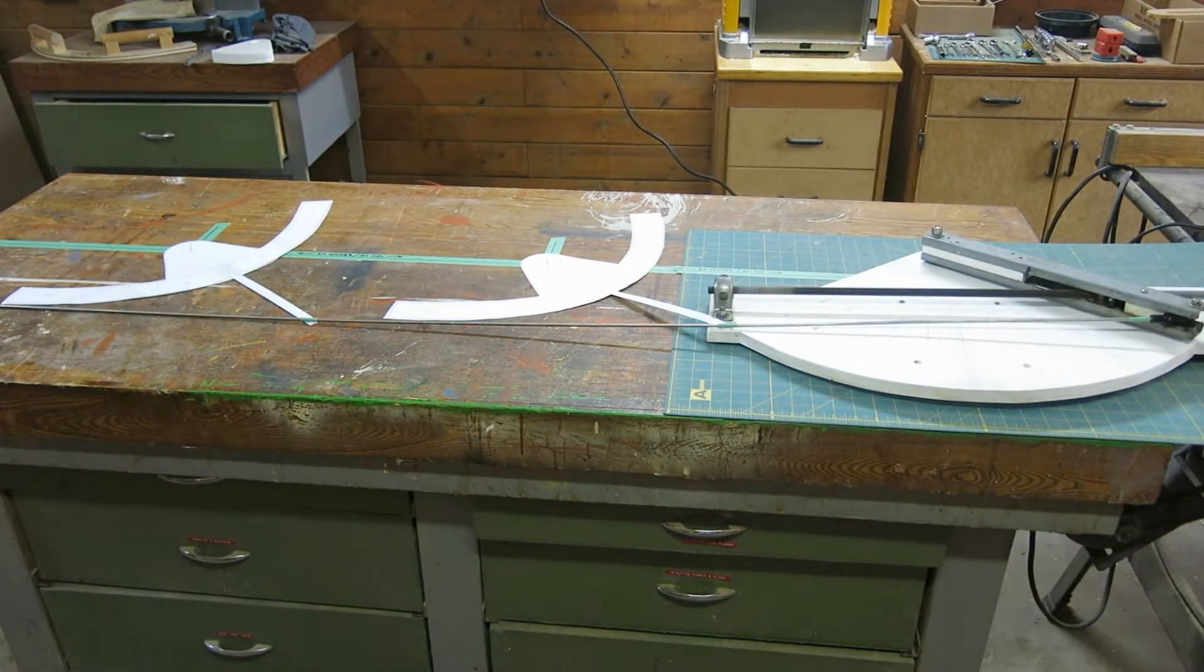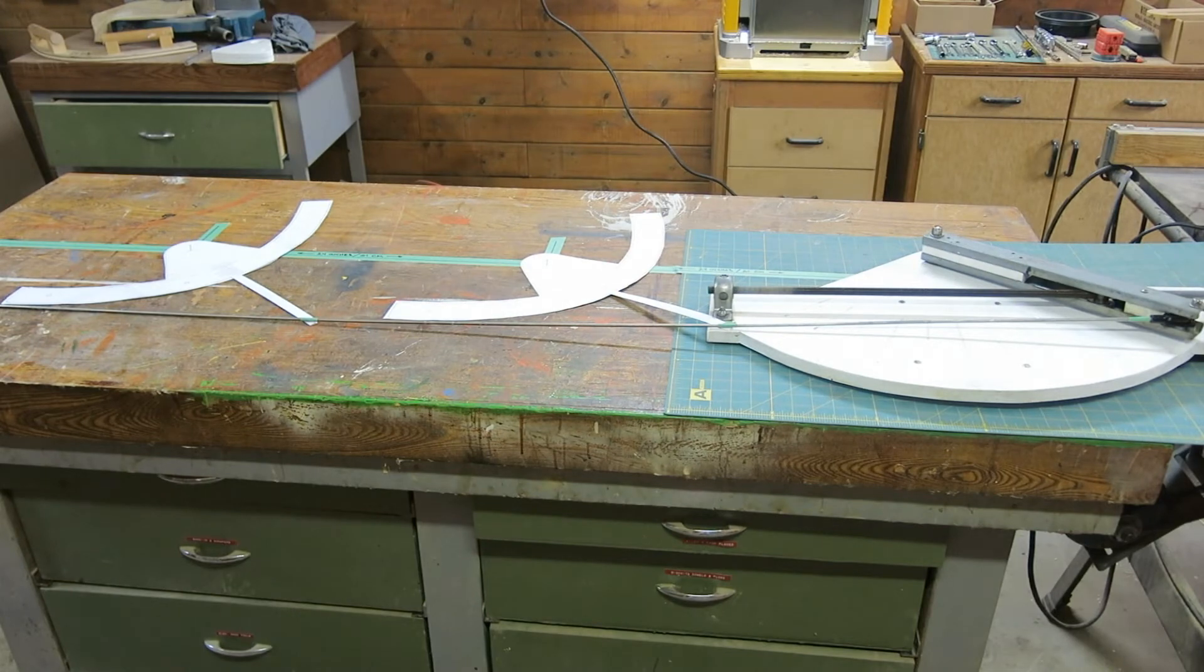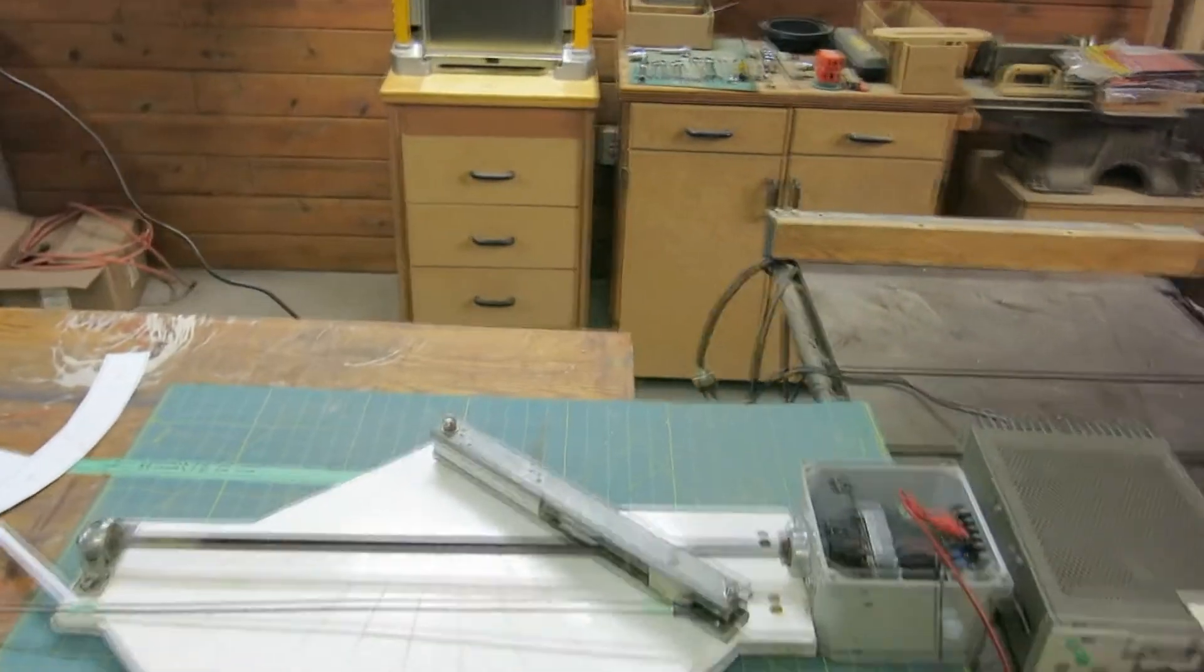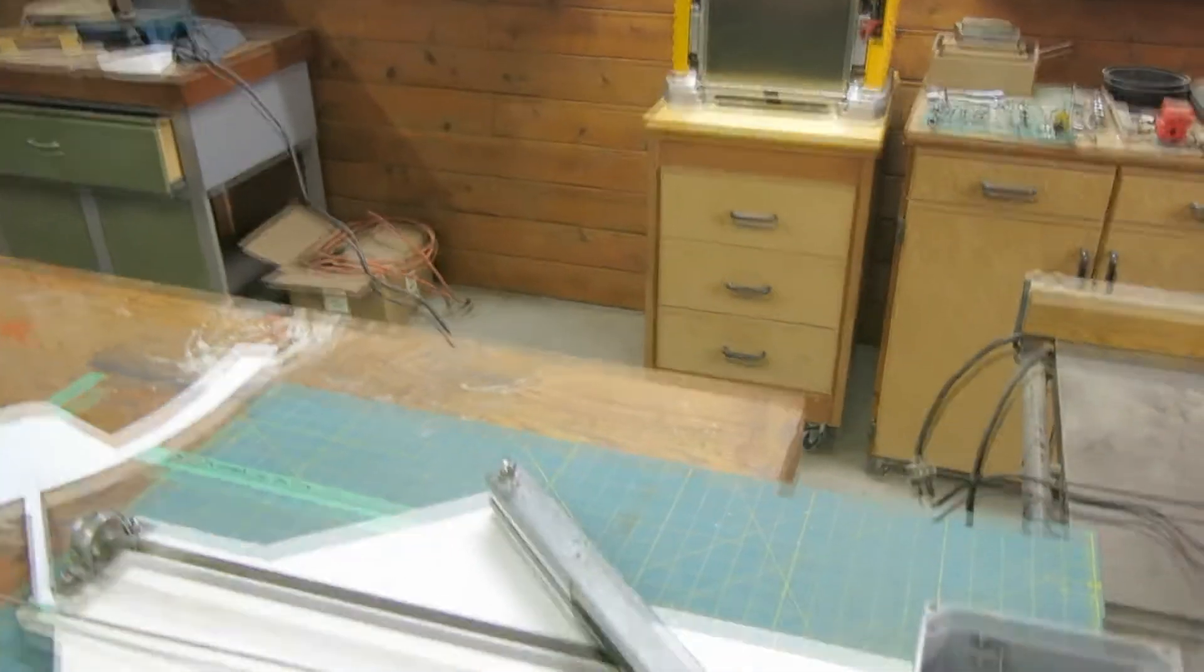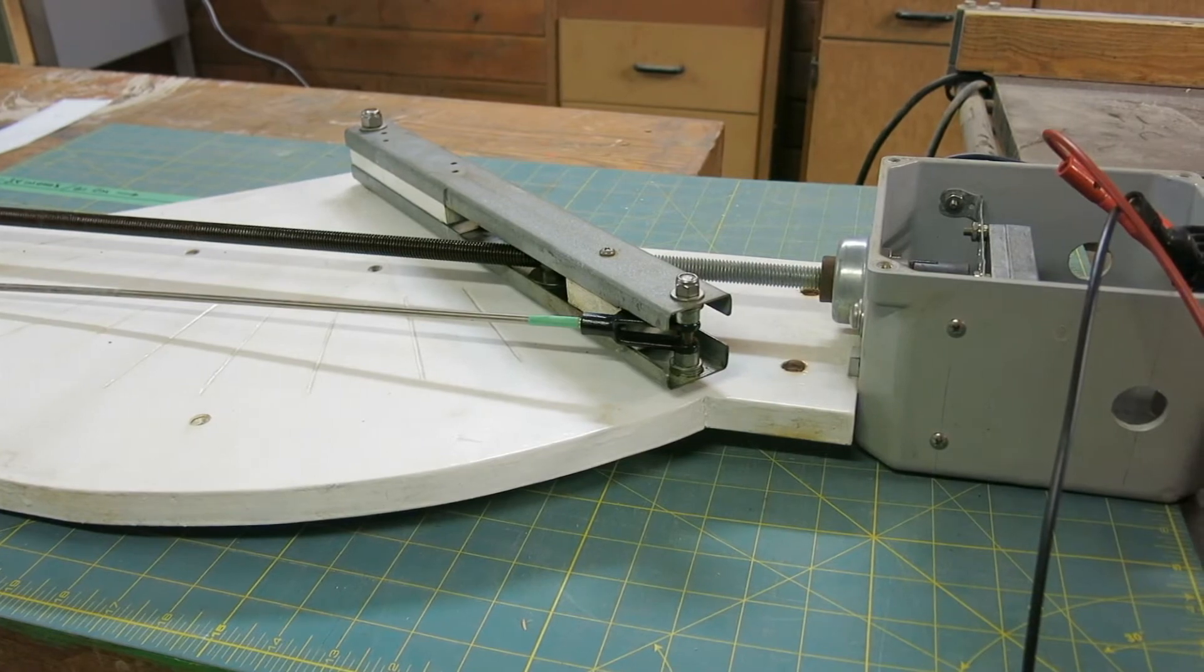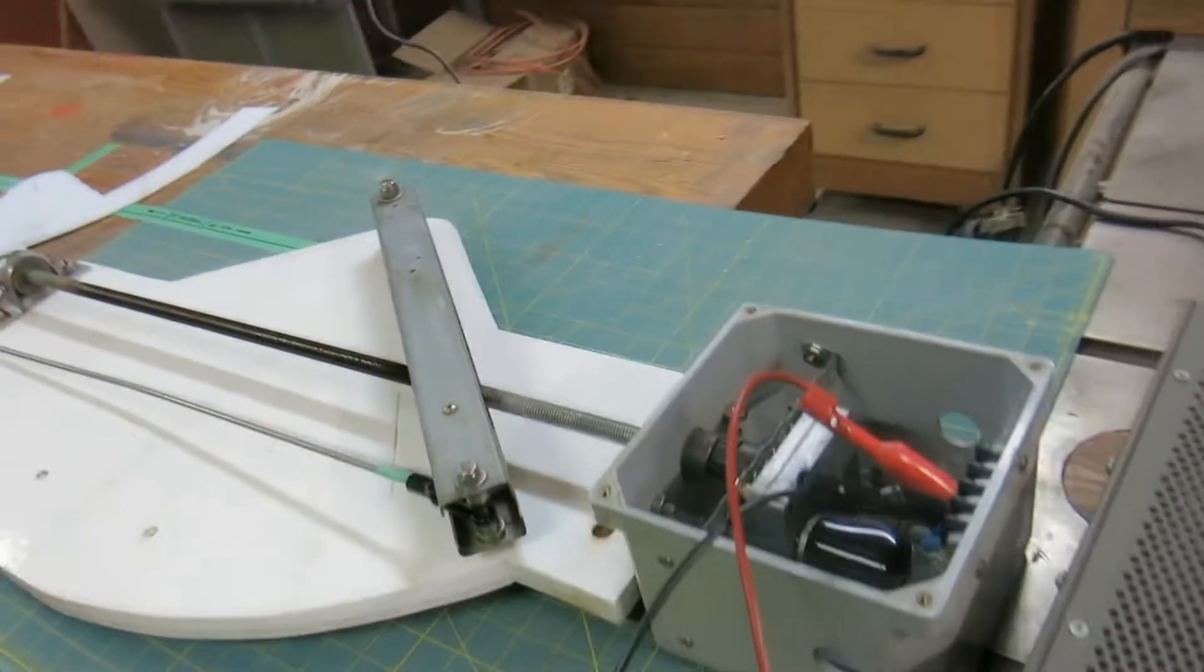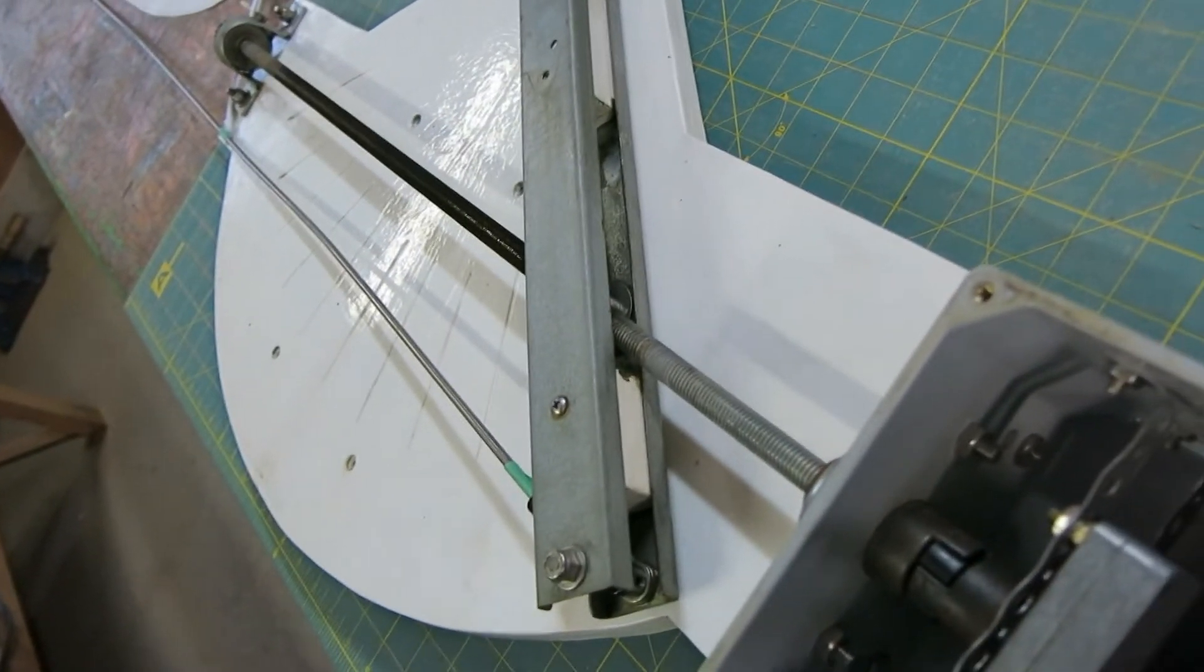So here we are entirely at one end, they call this east, and you can see all the arms are hard over to one end. At the motor drive itself you can see that the arm is about as far as it's going to go here, it actually goes a little further before it crashes into that wooden block there.